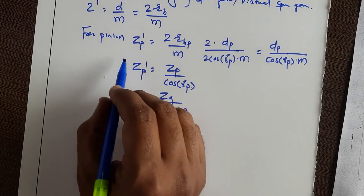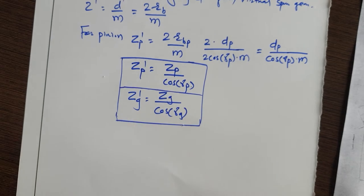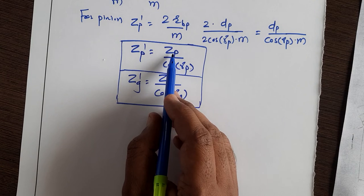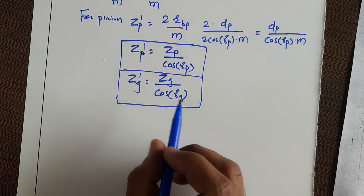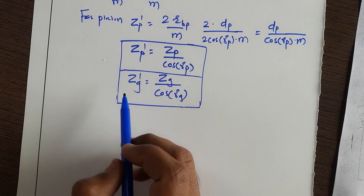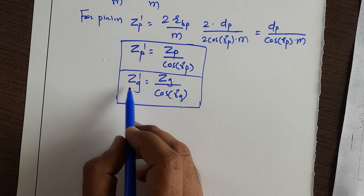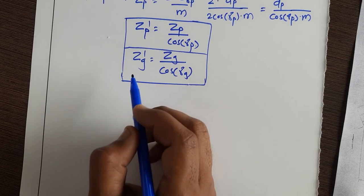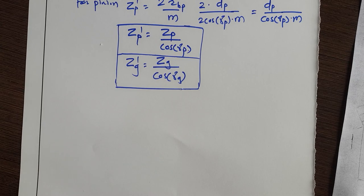Using these two formulas you can calculate the number of teeth on the equivalent spur gear for both the pinion and the gear. Here Z_P is the number of teeth on the bevel pinion, Z_G is the number of teeth on the bevel gear, Z_P' is the number of teeth on the equivalent or virtual spur pinion, and Z_G' is the number of teeth on the equivalent or virtual spur gear. The minimum number of teeth for the bevel pinion will be covered in the next video.